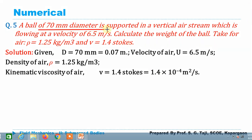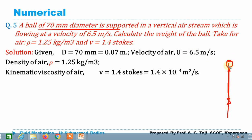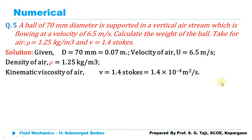The 70 mm diameter ball is supported in a vertical air stream. That means the ball remains stationary at its position. Whatever weight component of the ball acts in the downward direction is counteracted by the drag force acting upward. So the vertical weight component equals the drag force acting in the upward direction.